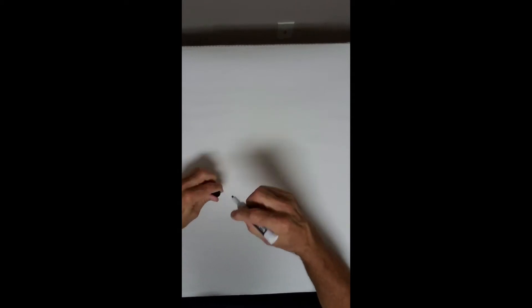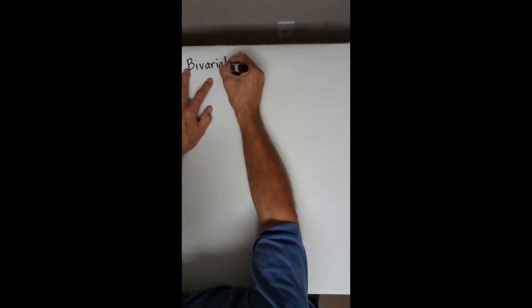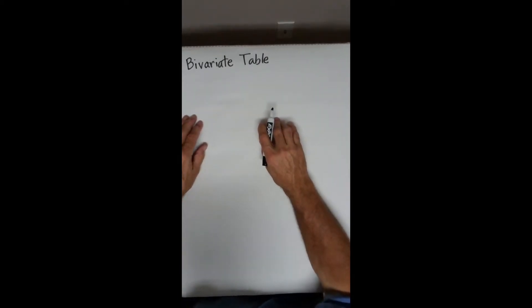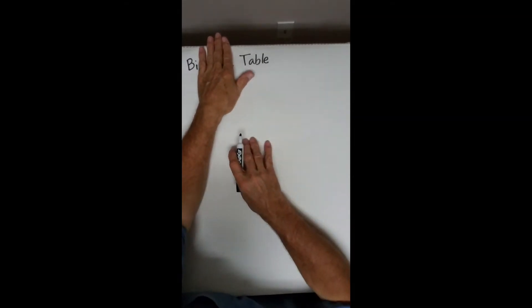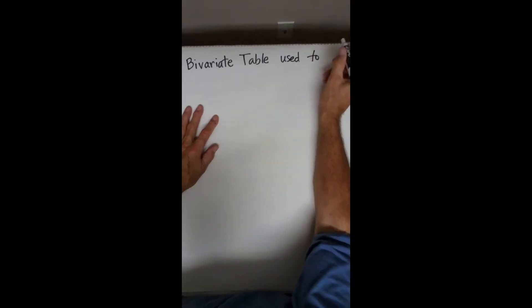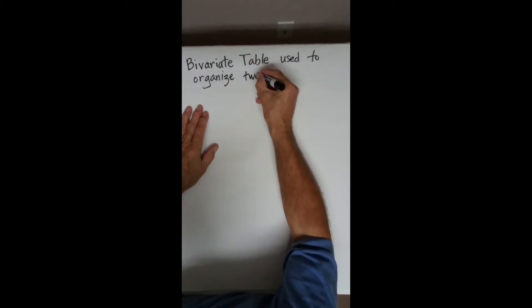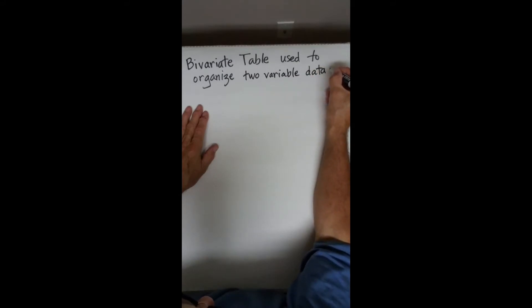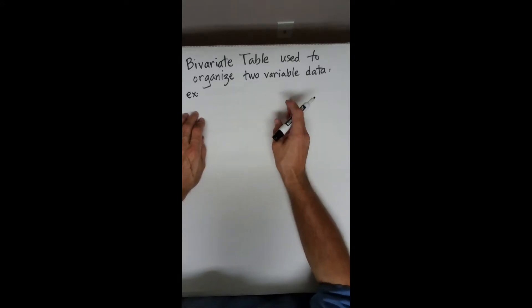This is the third table we're going to investigate. I named it a bivariate table — it probably has other names in the literature and is not included in your textbook. Remember that the prefix 'bi' means two and 'variate' means variable, so a bivariate table is used to organize two-variable data.